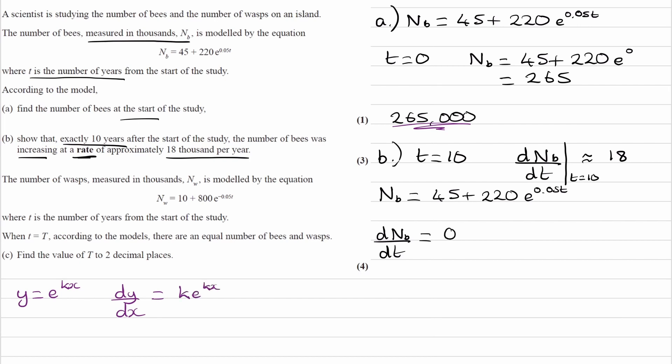So then this equation becomes 0.05 times 220 e to the 0.05t. Simplifying, this is 11 e to the 0.05t. Now we want to put in 10. So dnb/dt when t is 10 is 11 e to the 0.05 times 10, and that will end up being 18.14.